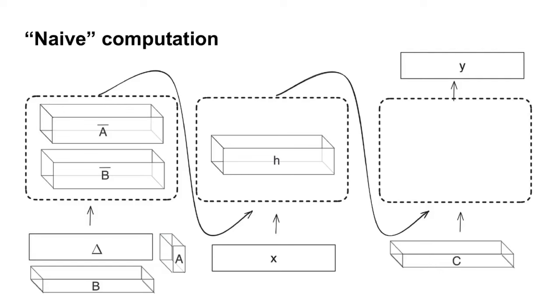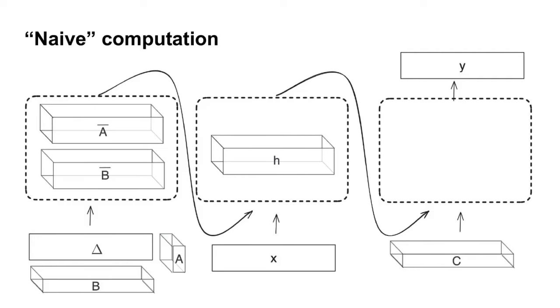This hidden tensor would once again be passed between this barrier of SRAM to high bandwidth memory, and then finally we would compute the output or the readout, which is the matrix multiplication between c and h.